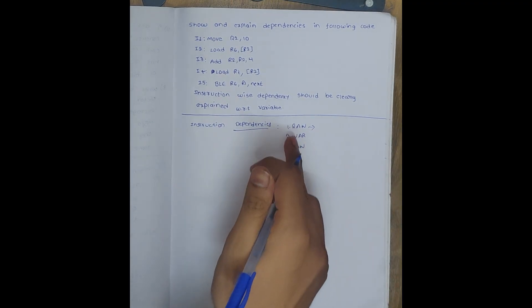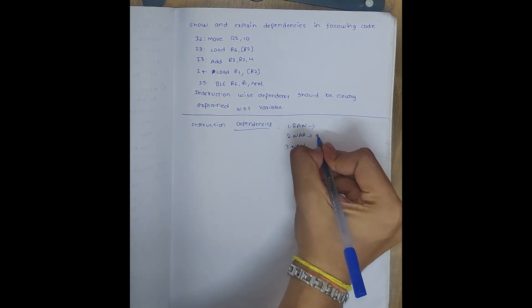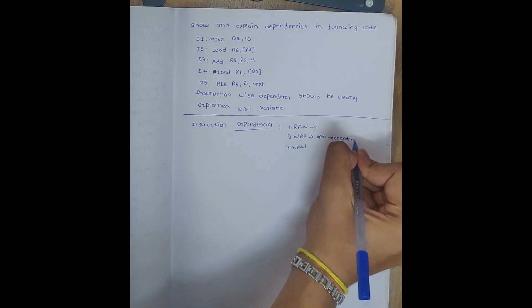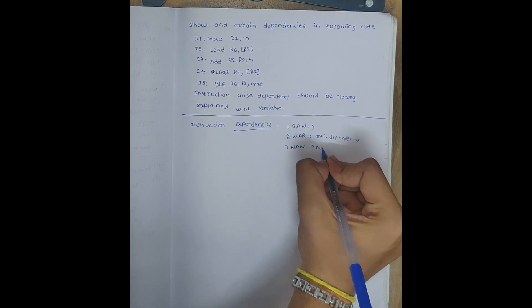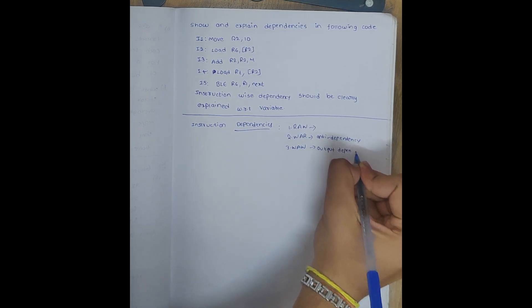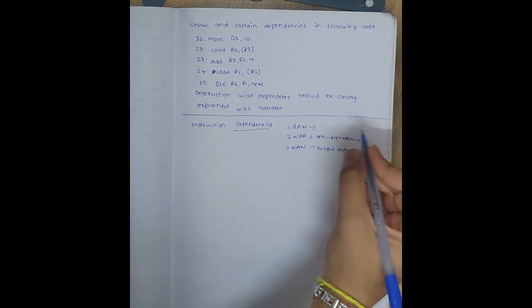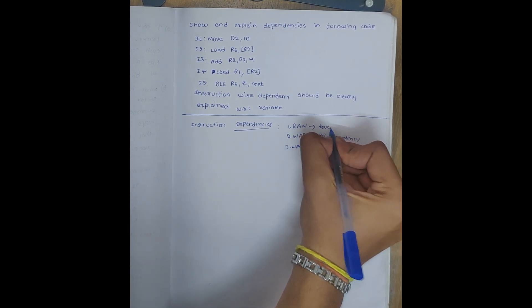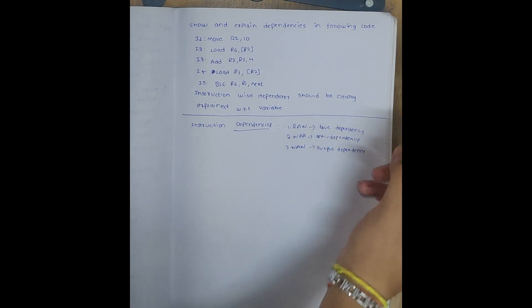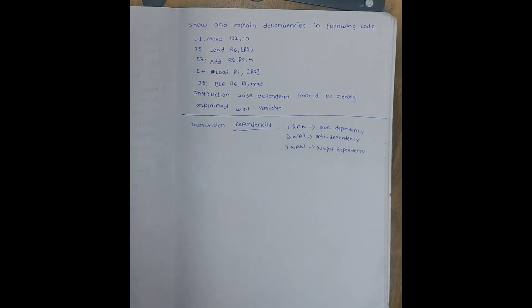This one is most common, and this is anti-dependency. And we can say this is output dependency. So there are three dependencies: RAW, WAR, and WAW.